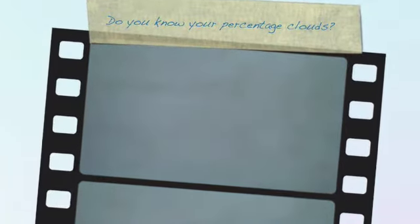The easiest percentage method is doing a percentage cloud. You write the sum in the middle corner and put 70 in the middle of the circle. First you put 100% hanging out of the cloud — 100% of 70 equals 70. Next you put 10% hanging out of the cloud. 10% of 70 is 7.